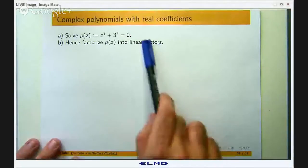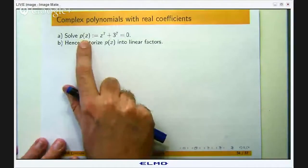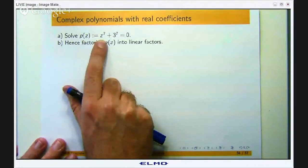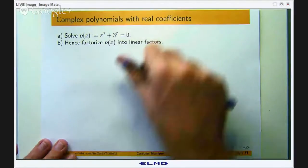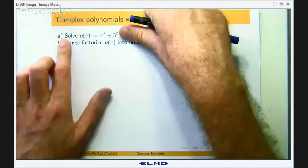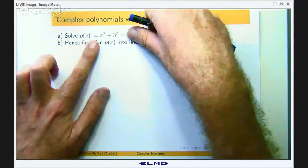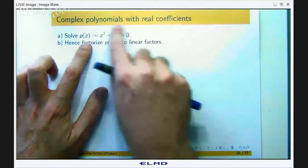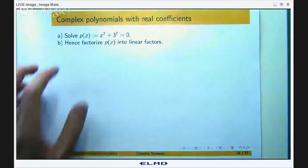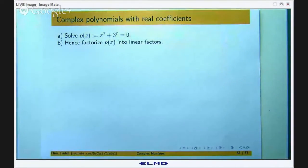So this is the example we are going to look at. I have got a polynomial of degree 7 defined to be z to the 7 plus 3 to the 7 and we are asked to find the roots of that polynomial just by solving this equation here and hence factorize p into linear factors.